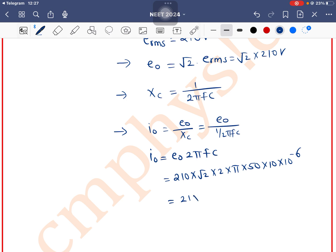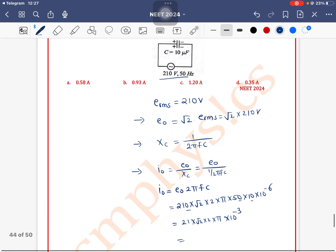So here we have 21 into root 2 into 2 into pi, then it's 3, 0 cancel and minus 3 will be the value of root 2, how much is it? 1.414.